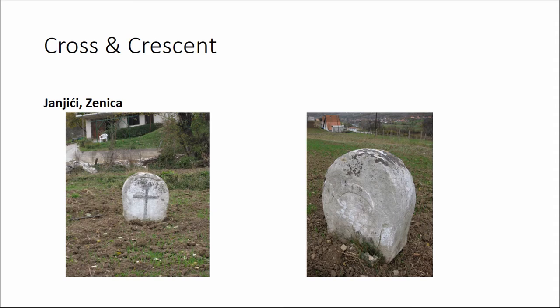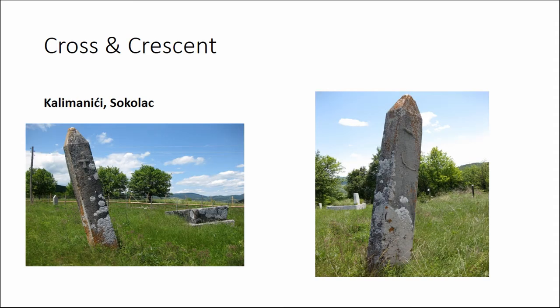We don't really know — unless we have other means of determining it — whether this is a Muslim or a Christian tombstone. Likewise, in this case, it is a Muslim cemetery: the Stećak is there, but there is a cross right on this large Muslim tombstone. The crescent is on the other side, along with the symbol of a bird.